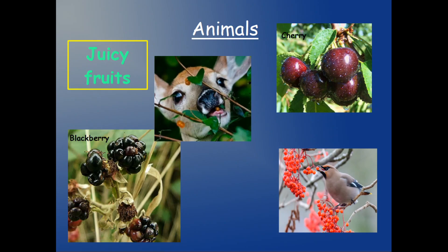And as I want to eat them, animals like deer or birds want to eat them too. So they eat them. What happens? Well, when they digest the fruit, they only digest the fruit. They don't digest the seed.